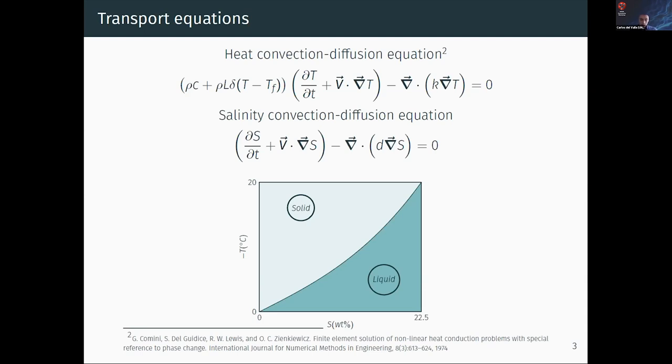With these assumptions, we end up with the following convection-diffusion equations. You can see the equations on screen, temperature T measuring degrees Celsius, and salinity S measuring weight percent. The remaining parameters are different for ice and water, but they are constant inside each phase. To determine if a point is liquid or solid, we use the fusion point of seawater, which depends on the salinity.